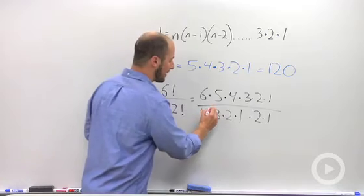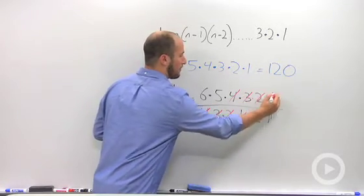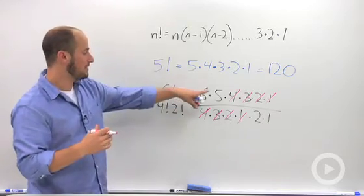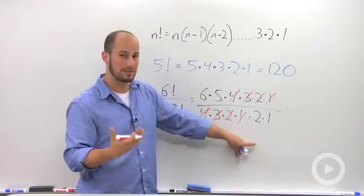Right there we know we can cancel out the four, three, two, and one from the four and the six, leaving us with the six and the five on top and the two on the bottom.